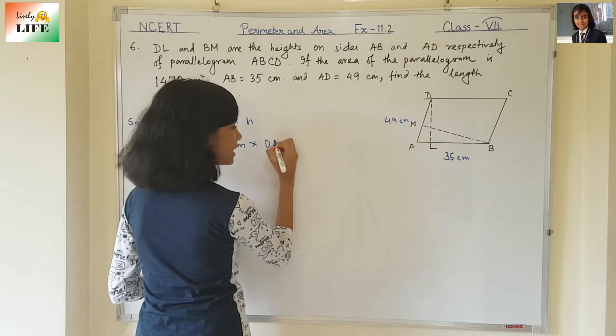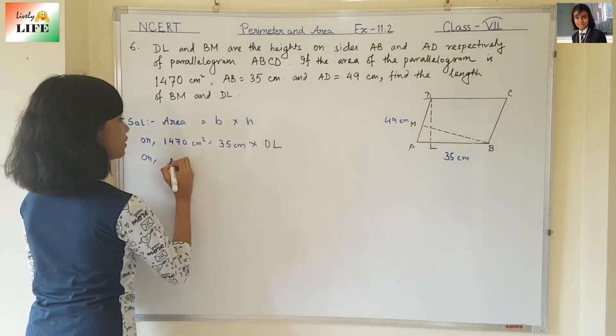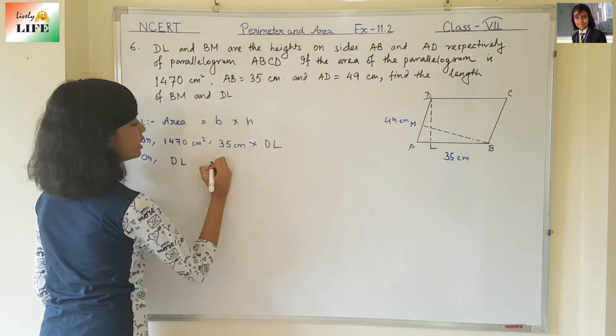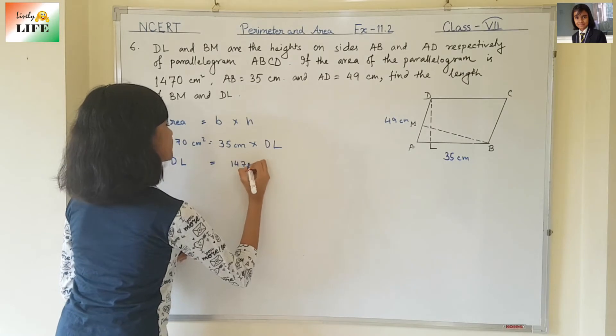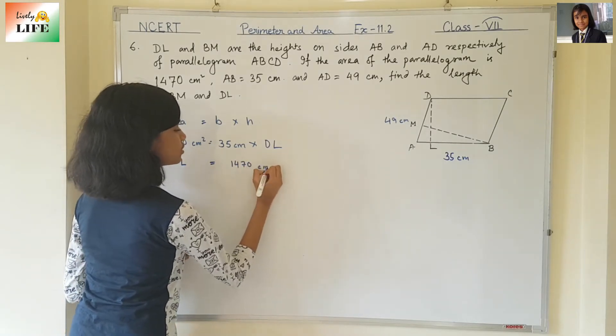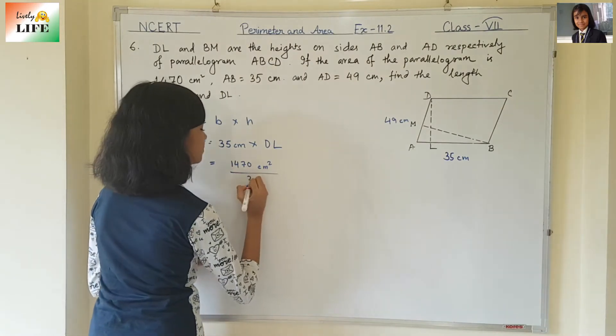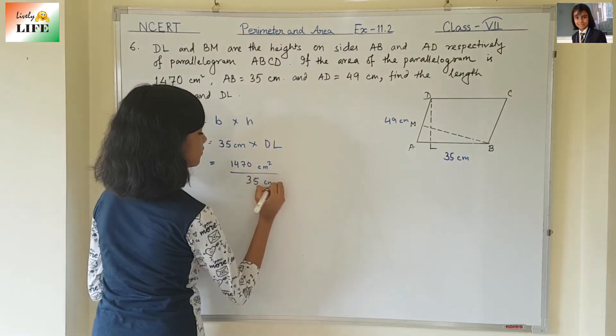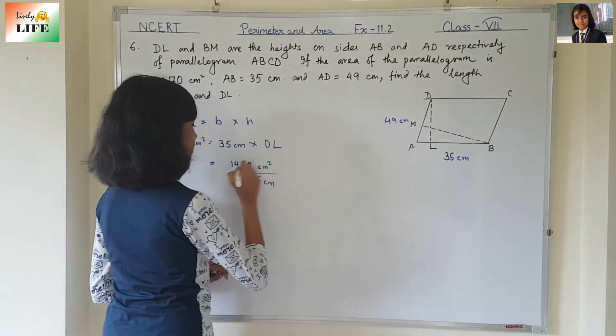And height is DL. We need to find DL. Let's write this over here. DL is equal to 1470 cm squared divided by 35 cm. Here was multiplication, here will be divide.